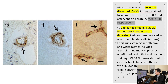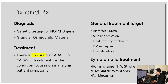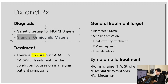Image I shows NOTCH3 ECD immunopositive punctate deposits — these rounded structures. We diagnose this condition by testing for the NOTCH3 gene. Additionally, granular osmophilic material, if present, can be highly suggestive of CADASIL.